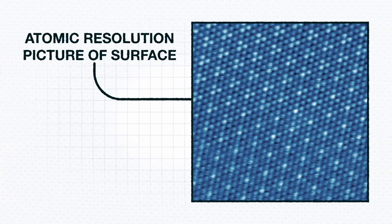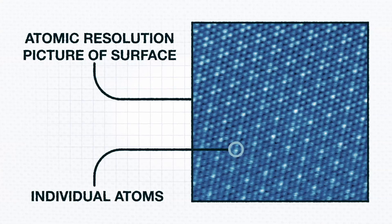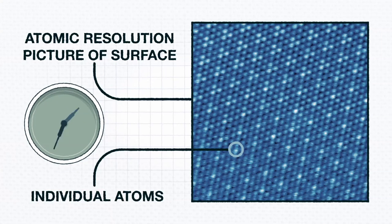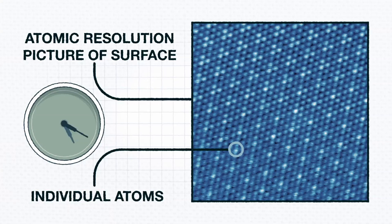The surface needs to be atomically clean for this to work, so it has to be in a vacuum, which is almost as good as in outer space. There are so few atoms flying around that we can look at the same surface for months without seeing any change.